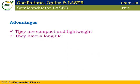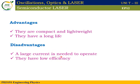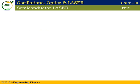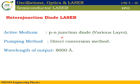Advantages: semiconductor lasers are compact and lightweight — very small and easy to handle. Next is the working time period. Disadvantages: the homo junction is a single junction — one PN junction with a single layer of semiconductor. The active medium is the PN junction diode with various layers. This uses the direct conversion method as the pumping process. The wavelength output is 8000 Angstrom units.